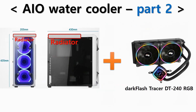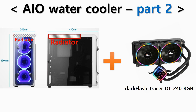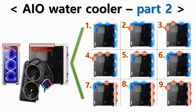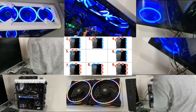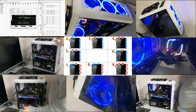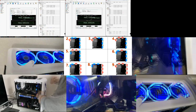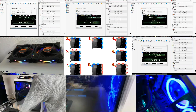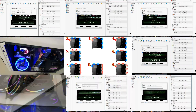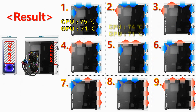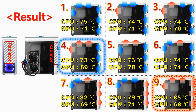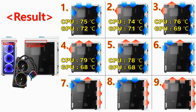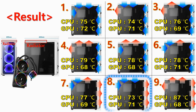In part 2, after setting up the radiator on the top of the case, I tested which condition showed the most effective result for PC cooling across 9 different cooling fan settings. Part 2 also took more than 5 hours to test all conditions. The result of part 1 showed number 4 setting was the best, and in part 2, number 8 setting showed the best result.